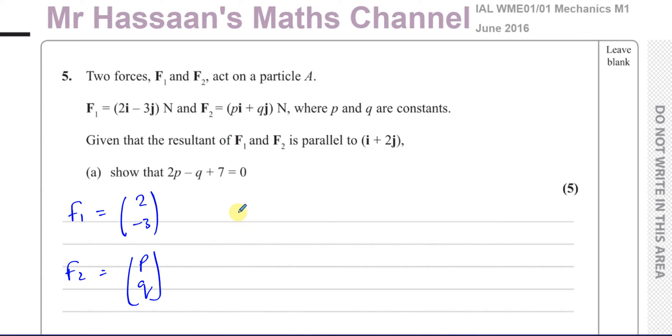Given that the resultant of F1 and F2 is parallel to I plus 2J. Now when a vector is parallel to another vector, it's not equal to the vector, but it's equal to some multiple of that vector, some fraction or multiple of that vector.